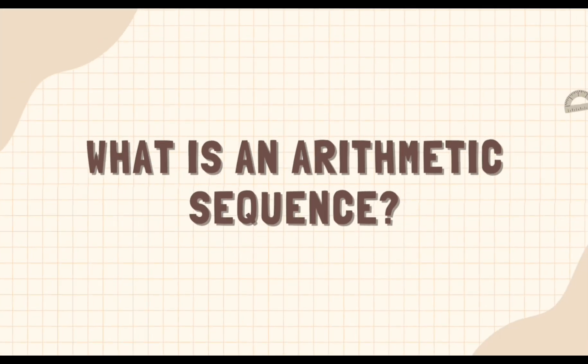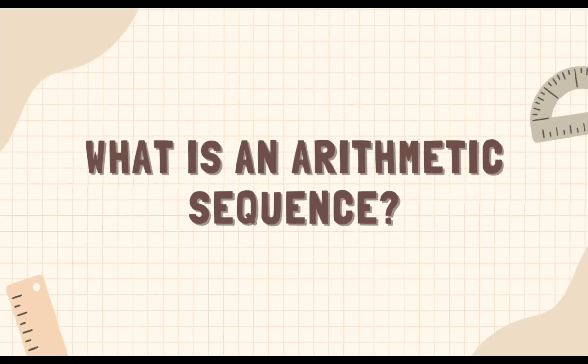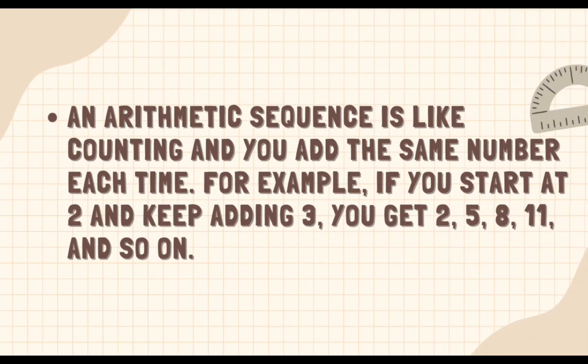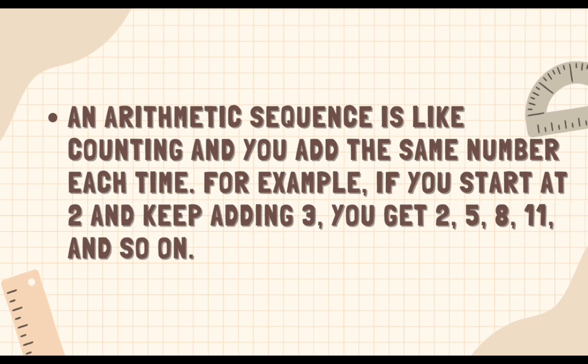What is an arithmetic sequence? An arithmetic sequence is like counting and you add the same number each time. For example, if you start at 2 and keep adding 3, you get 2, 5, 8, 11, and so on.